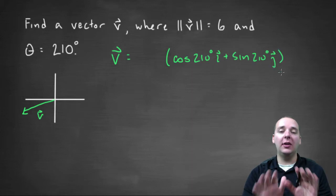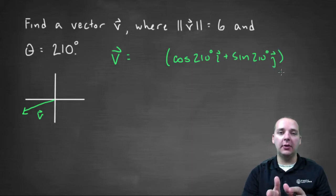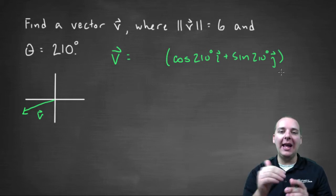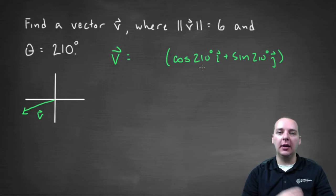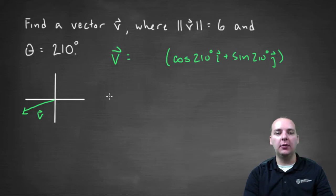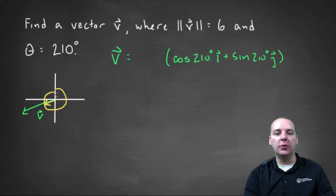Now if that's all that I did, that would be a vector with an i and j component that would aim in the correct direction, because the cosine gives you the i-th component and the sine gives you the j-th component for the vector. The only problem is that as is, this is only a unit vector — it would only be around the unit circle, which is much shorter than it should be.